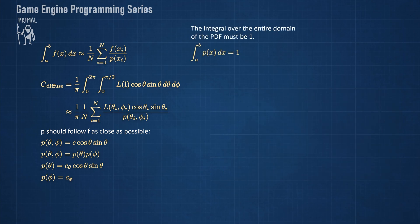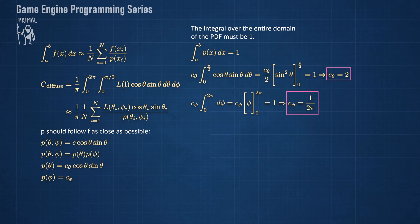We know that the integral of P should be equal to 1, so we can use this to find these constants. This is fairly easy, and evaluating these integrals, we get 2 for C theta and 1 over 2 pi for C phi. I'm going to assume that you already know how to solve integrals analytically, which is a topic in calculus, and I'm not going to discuss that here in this video. Using these constants, P of theta equals 2 times cosine theta sine theta, and P of phi equals 1 over 2 pi.